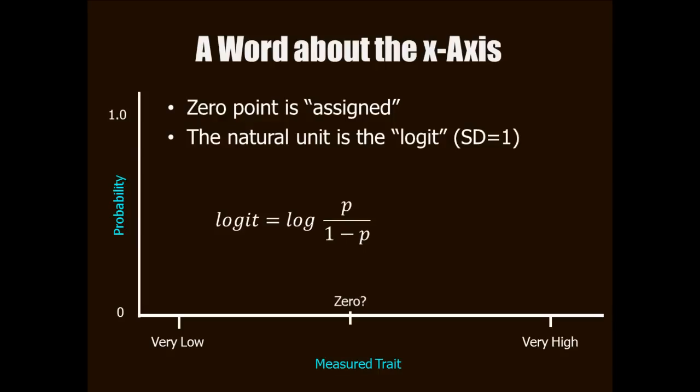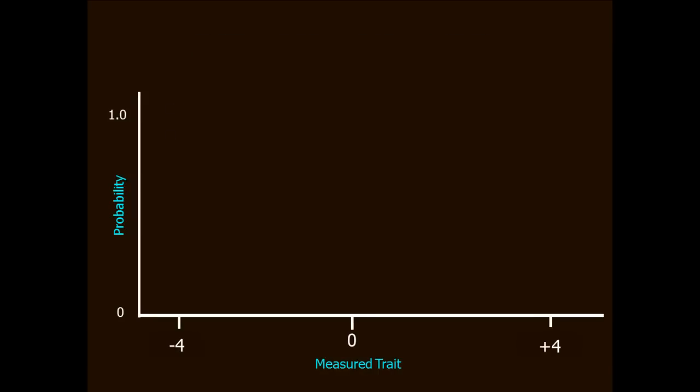The range of logit scores is usually similar to a z-score, so they naturally range from around minus 4 to plus 4. Logits may be mathematically convenient as a unit, but they're not very convenient when you're telling someone how much shoulder function they have. Imagine telling someone her shoulder function is minus 3.